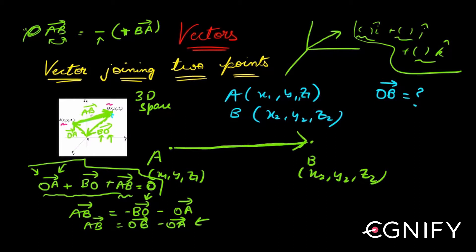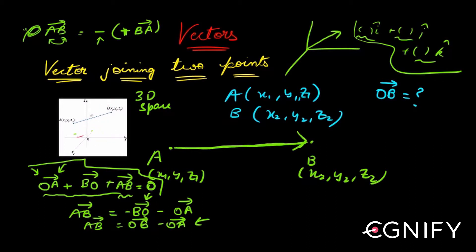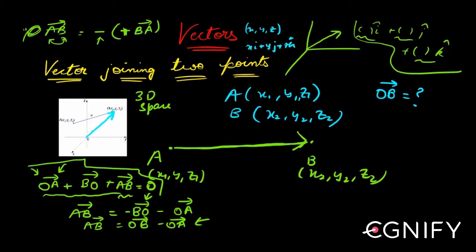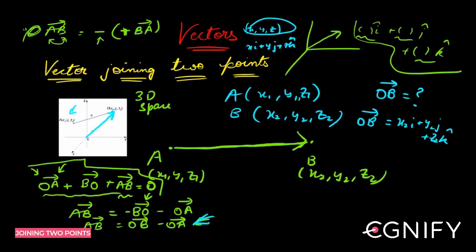Now, OB bar is simply the position vector of point B. The position vector is the vector which starts from the origin and goes to that point. If a point has coordinates x, y, z then its position vector is x·i + y·j + z·k. So OB bar is x2·i + y2·j + z2·k. Similarly, OA bar is the position vector of point A, which is x1·i + y1·j + z1·k.